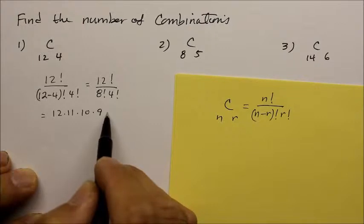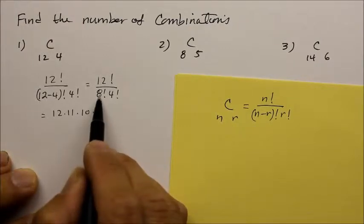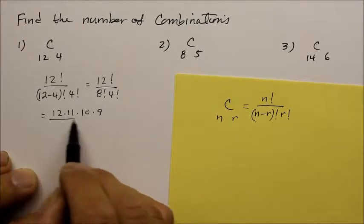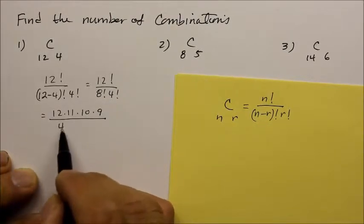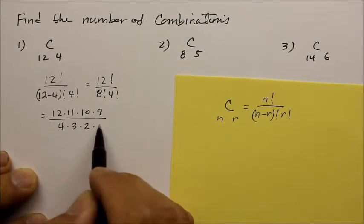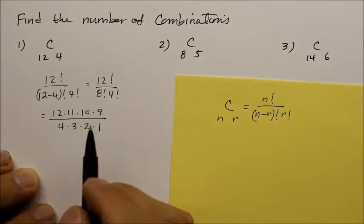We're going to lay it out. What is the 12 factorial? We're going to say that's 12, 11, 10, 9, and I'm going to stop. Because whatever follows after that, 8, 7, 6, all the way to 1, is going to be crossed off by this 8 factorial over that 4 factorial. 4, 3, 2, 1.